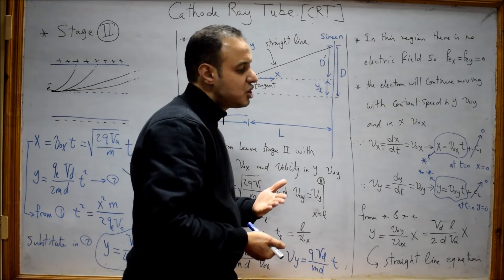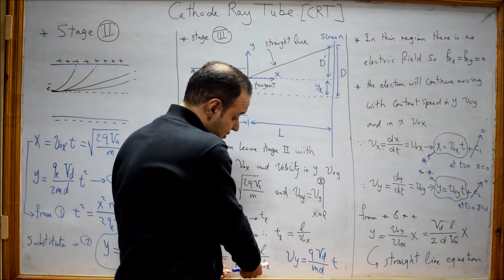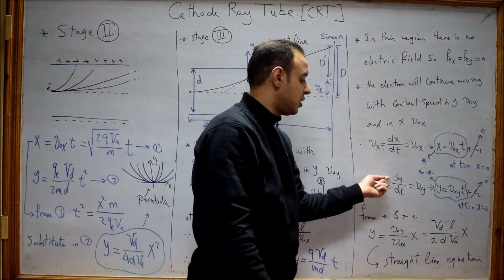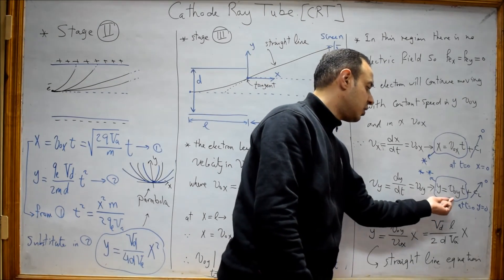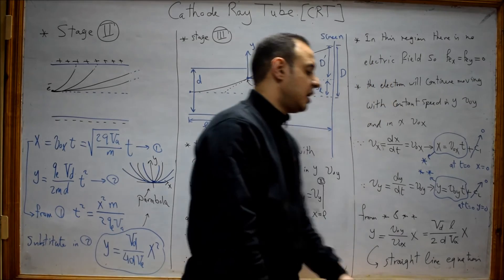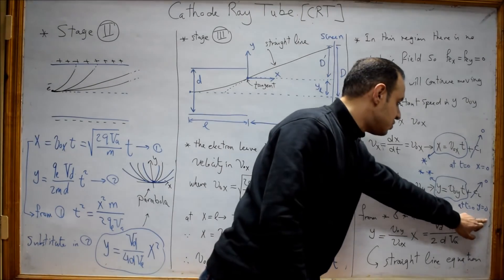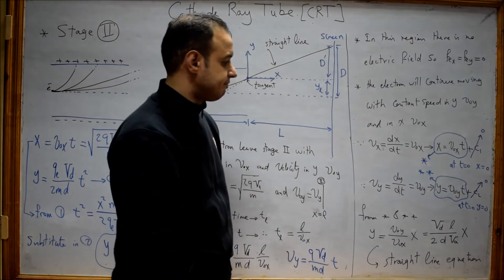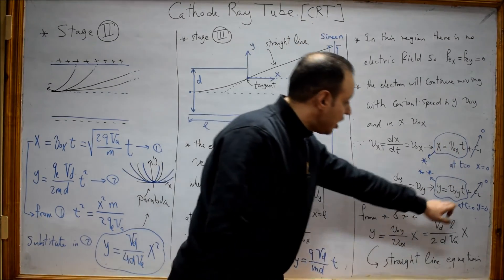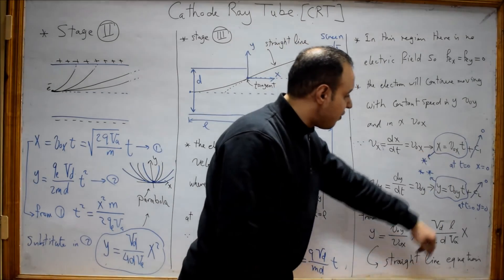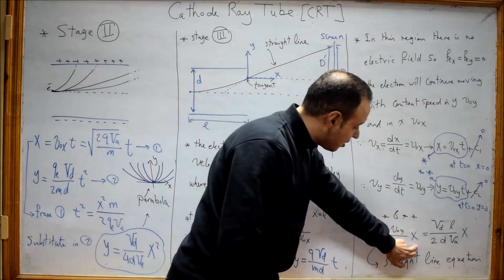Similarly, for the y direction, v_y equals the constant v₀y, which equals dy/dt. Integrating both sides gives y = v₀y · t + C₂. At t = 0 the electron is at the origin, so y = 0 and C₂ = 0. From the x equation, t = x / v₀x. Substituting this into the y equation gives y = (v₀y / v₀x) · x, which is a straight-line equation, confirming the electron follows a straight-line trajectory toward the screen.